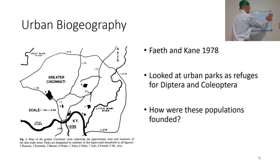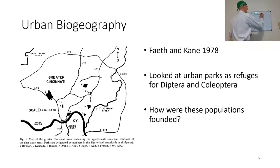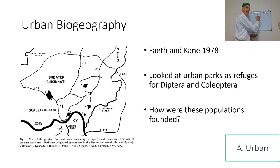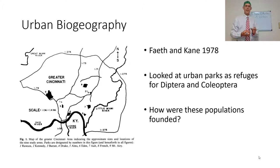For an example of a metapopulation, we can go to an urban area or to mountains — let's look at urban first. These urban areas can have small populations in each one of the parks, such as in Cincinnati studied by Faith and Kane in 1978. Each one of these parks is going to be one spot where you can find flies (Diptera) and beetles (Coleoptera). The question then is: how is this population actually founded? What could be true is that this could be a remnant or relic population of the area before settlement.